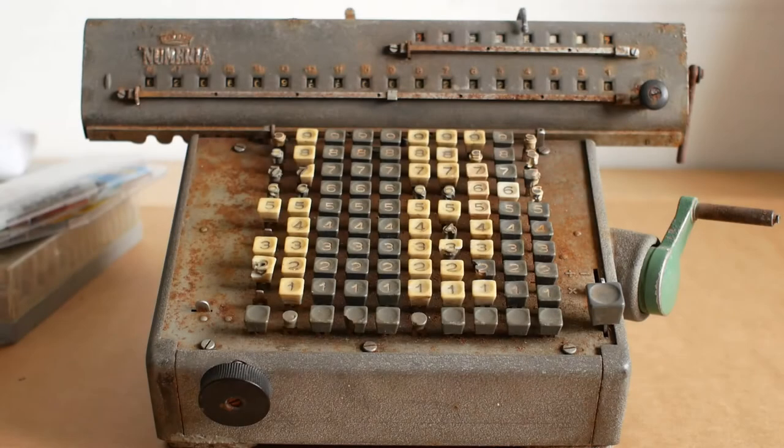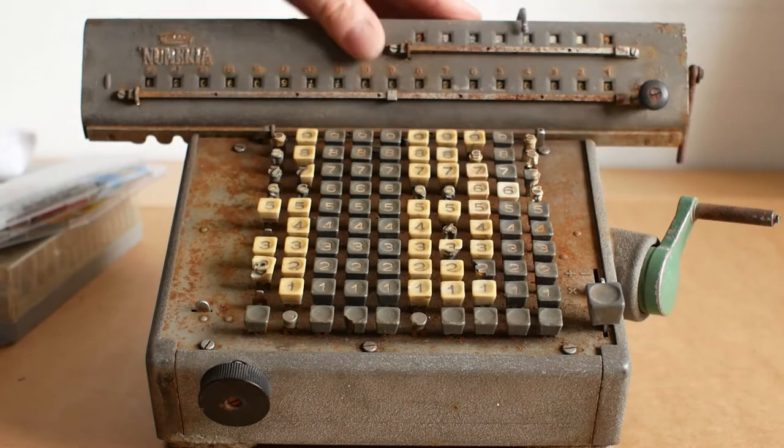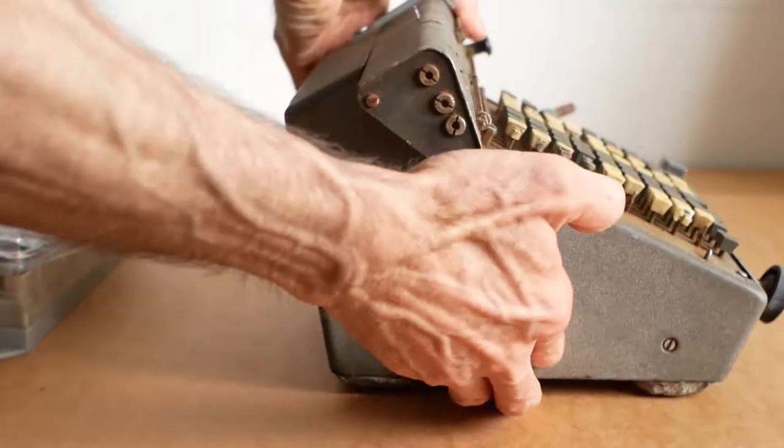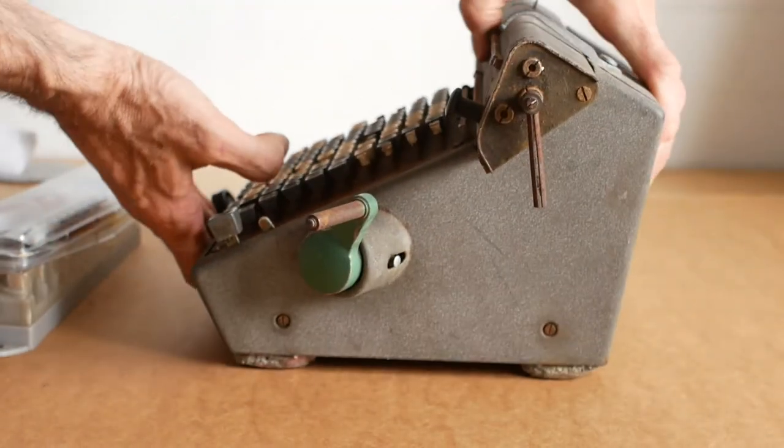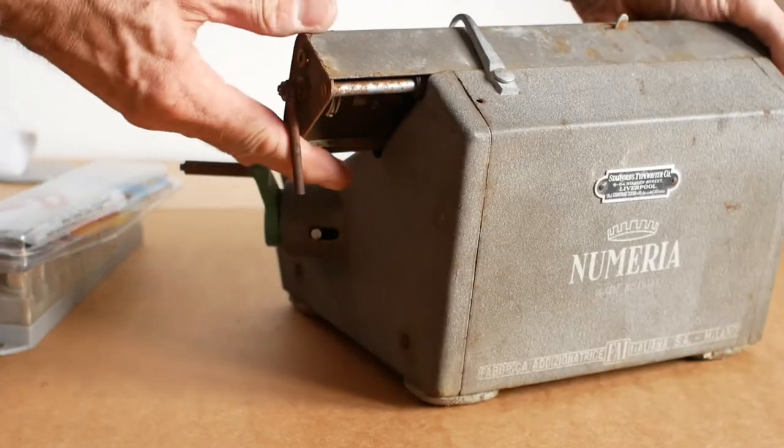So the first thing to do is to remove the carriage. There's a rod that runs the entire width of the carriage which is held in place by a screw on the left hand end and it has a screw head on the other end so you can hold it still as you undo that screw.